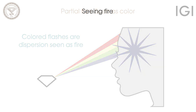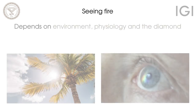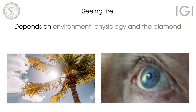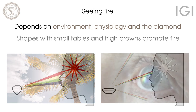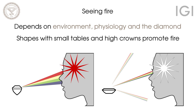Fire is not a constant. It depends on light environment, the constriction or dilation of your pupil, and the diamond itself. Generally speaking, diamond shapes with small tables and high crowns promote fire more than shapes with shallow crowns.